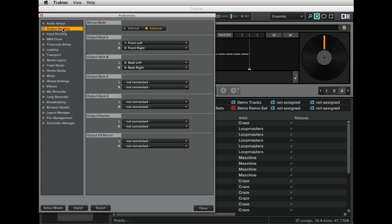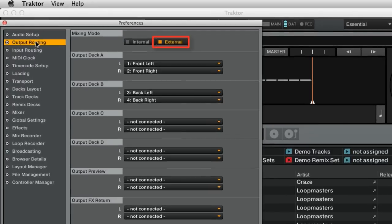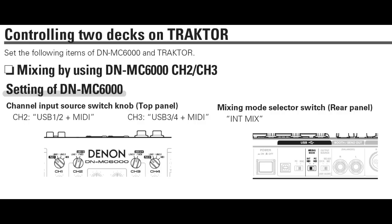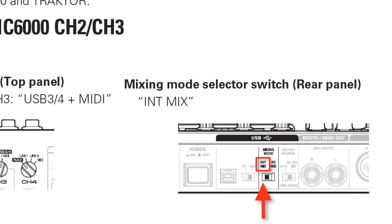Next, let's check the output configuration. If you wish to use 2-deck operation and you want to mix the audio signals externally on the DNMC 6000, set the mixing mode to External and output for Deck A to Channels 1 and 2, and Deck B to Channels 3 and 4. Then on the DNMC 6000, set Channel 1 to AUX 1, Channel 2 to USB 1-2 MIDI, Channel 3 to USB 3-4 MIDI, and Channel 4 to AUX 2. Finally, set the mixing mode switch on the back of the machine to INT Mix.